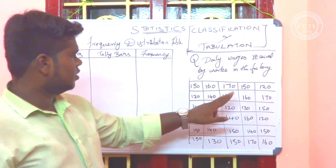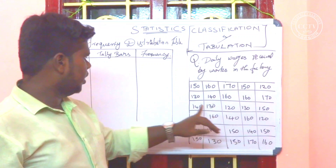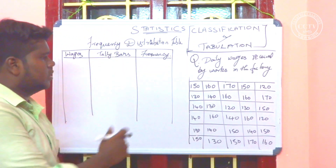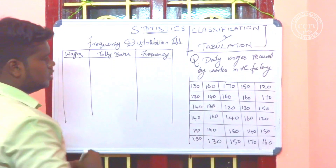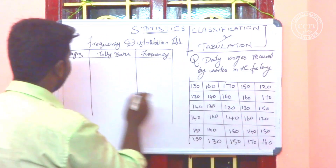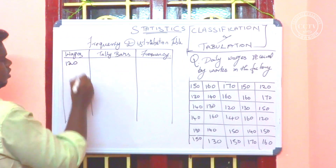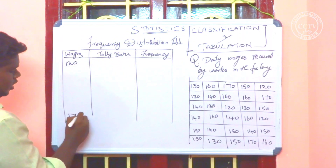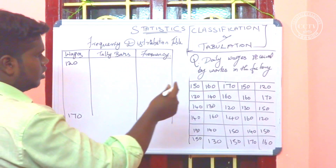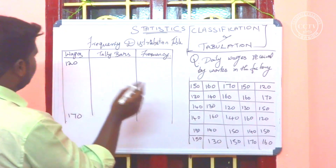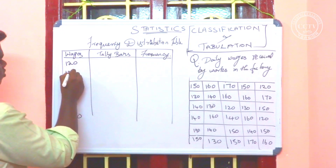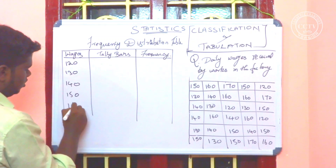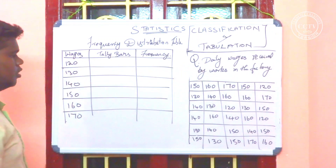The values are: 150, 160, 170, 120, 130, and 140. The lowest value is 120 and the highest value is 170. There is a difference of 10 between values, so we have: 120, 130, 140, 150, 160 — okay, let's go to frequency.